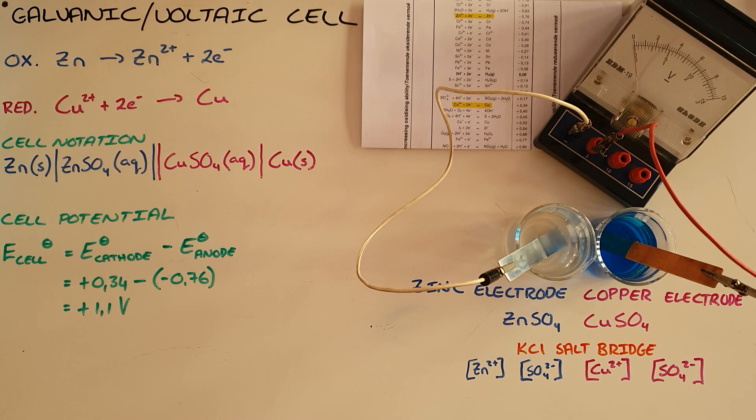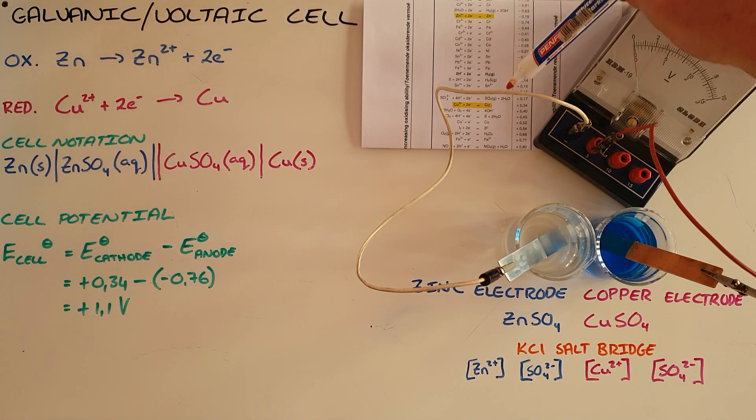So the two possible half reactions here are that of zinc and copper and I would use the table of standard reduction potentials to determine which direction the spontaneous reaction occurs. And we can see here that on table 4B, since the zinc occurs above the copper half reaction, we can say that the zinc is going to be oxidized.